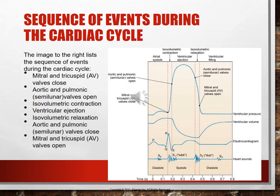S1 occurs with the closure of the AV valves and signals the beginning of systole. The mitral component slightly precedes the tricuspid component, and S1 is heard loudest at the apex of the heart. S2 occurs with the closure of the semilunar valves — the aortic and pulmonic valves — and signals the end of systole.